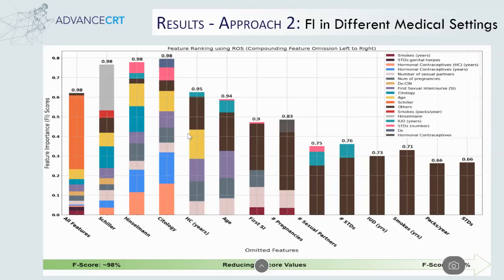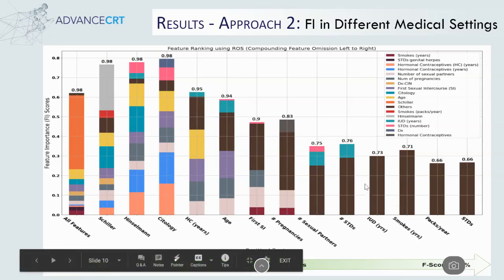Using the second approach, we first train the model with all the features and then keep excluding the highest-ranked features from the previous instance of the model. We plot the FI scores corresponding to different features in each iteration of the trained model. The omitted feature is indicated on the x-axis and the width of each colored bar represents the FI score corresponding to different features. Features with very low FI scores are represented by an 'other' stack with a brown colored bar. We can observe that on excluding important features, the total sum of FI scores assigned to features keeps decreasing because of their low correlation with the biopsy results, and this also impacts the performance metric F-score, which is reduced to 66% from 98%.